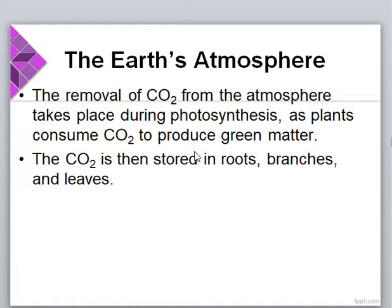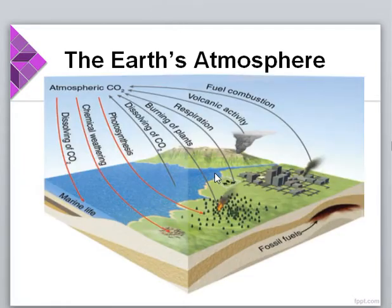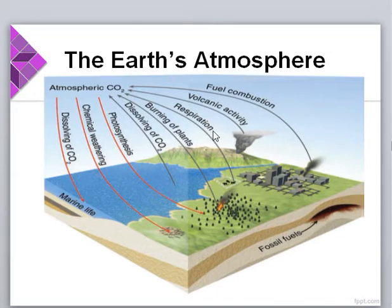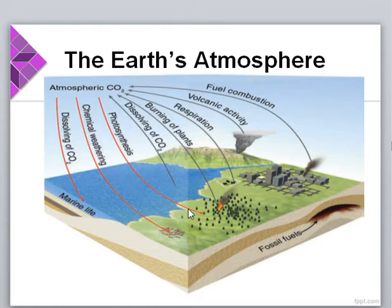Carbon dioxide is stored in the roots, branches, and leaves of plants. This diagram shows the main components of the atmospheric carbon dioxide cycle. The gray lines show processes that put carbon dioxide into the atmosphere, whereas the red lines show processes that remove carbon dioxide from the atmosphere.